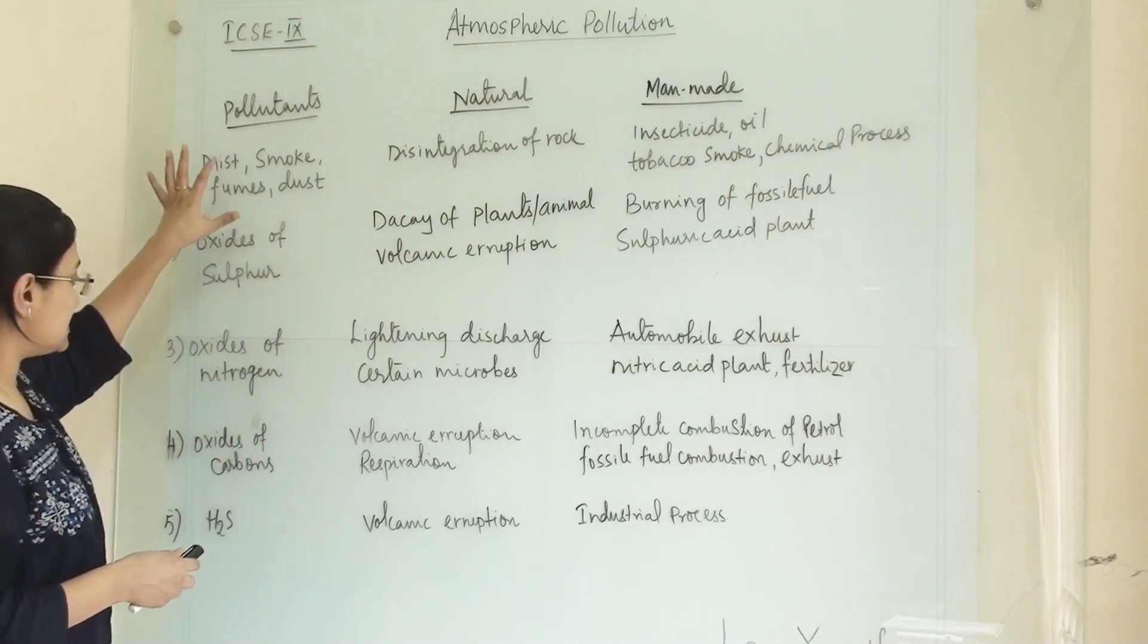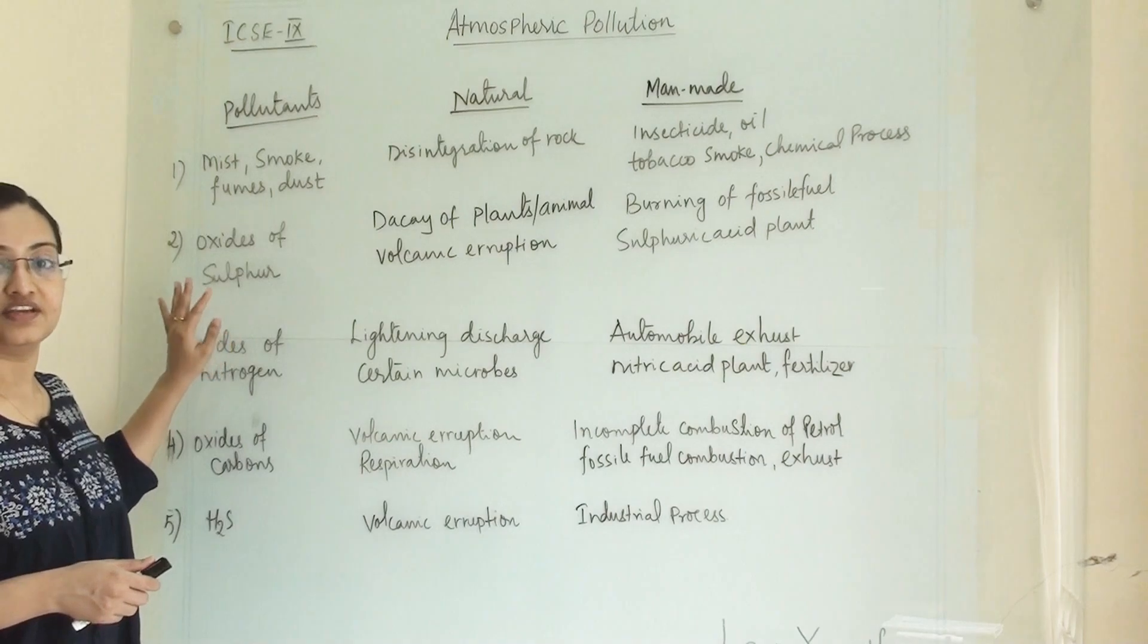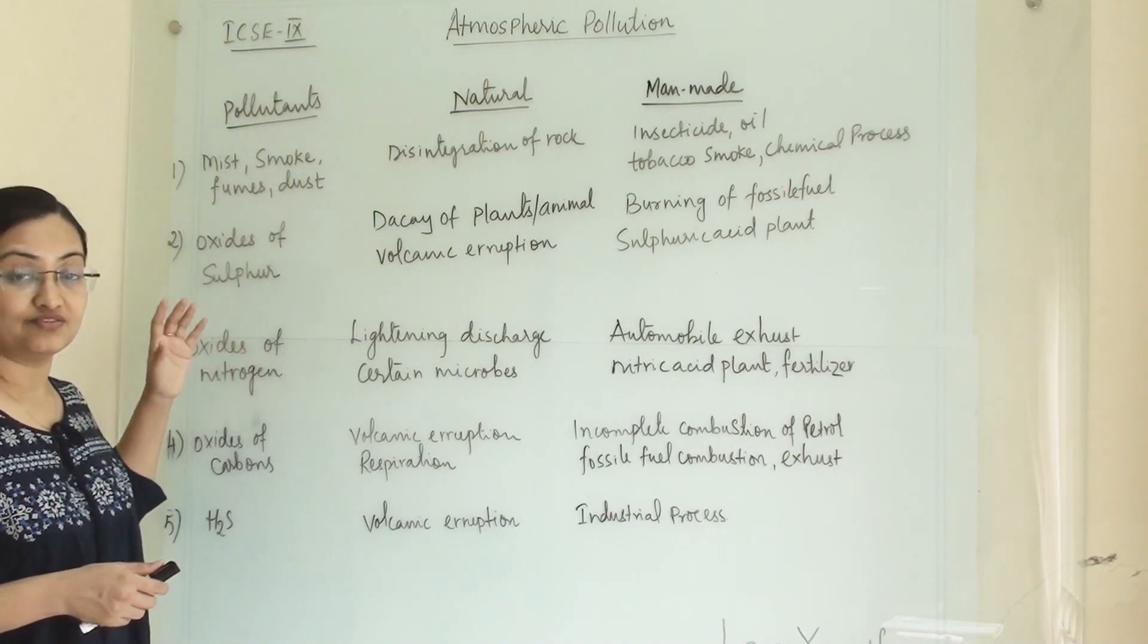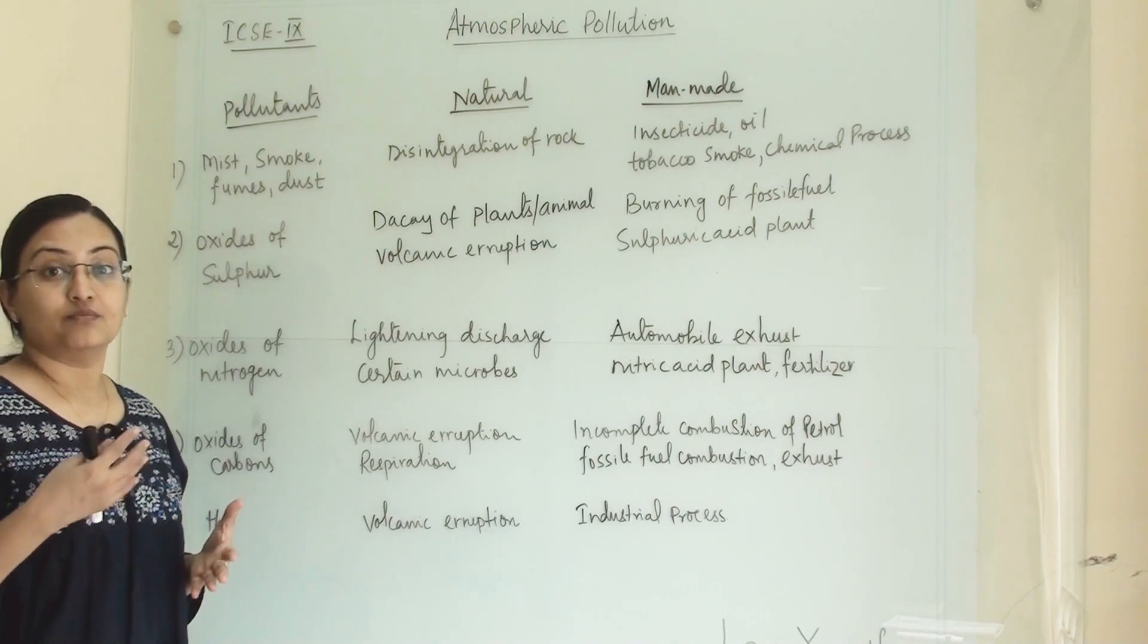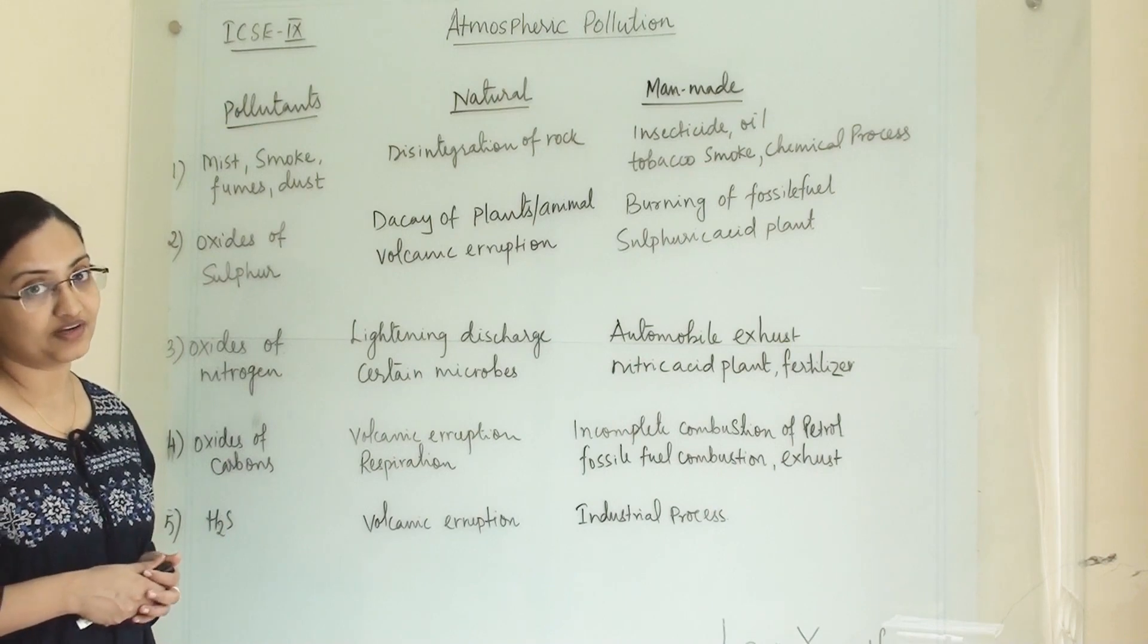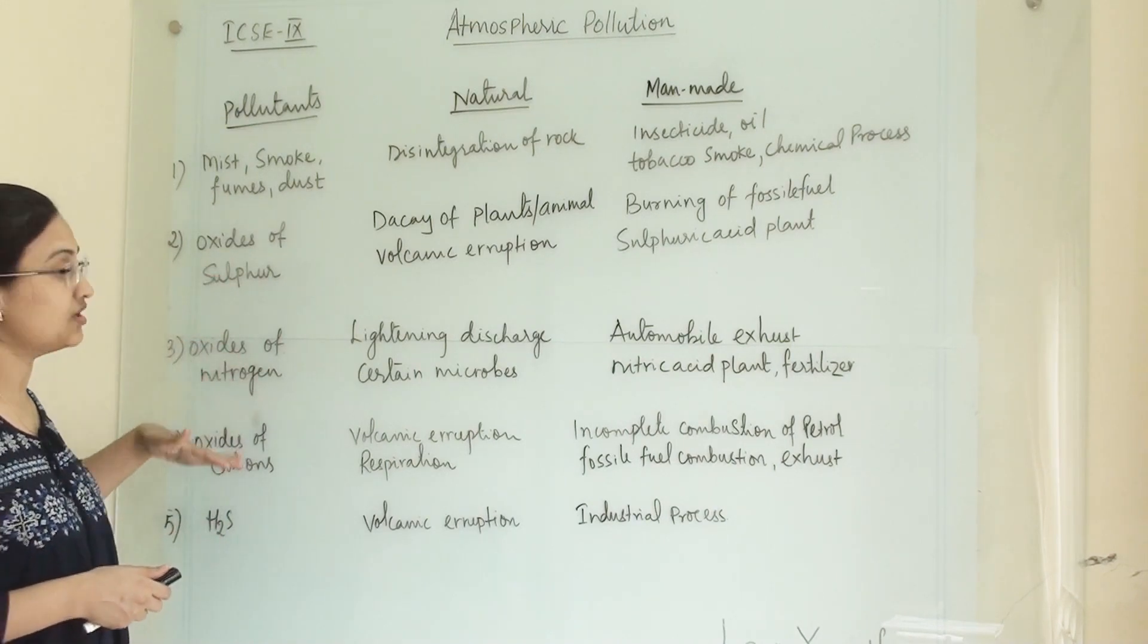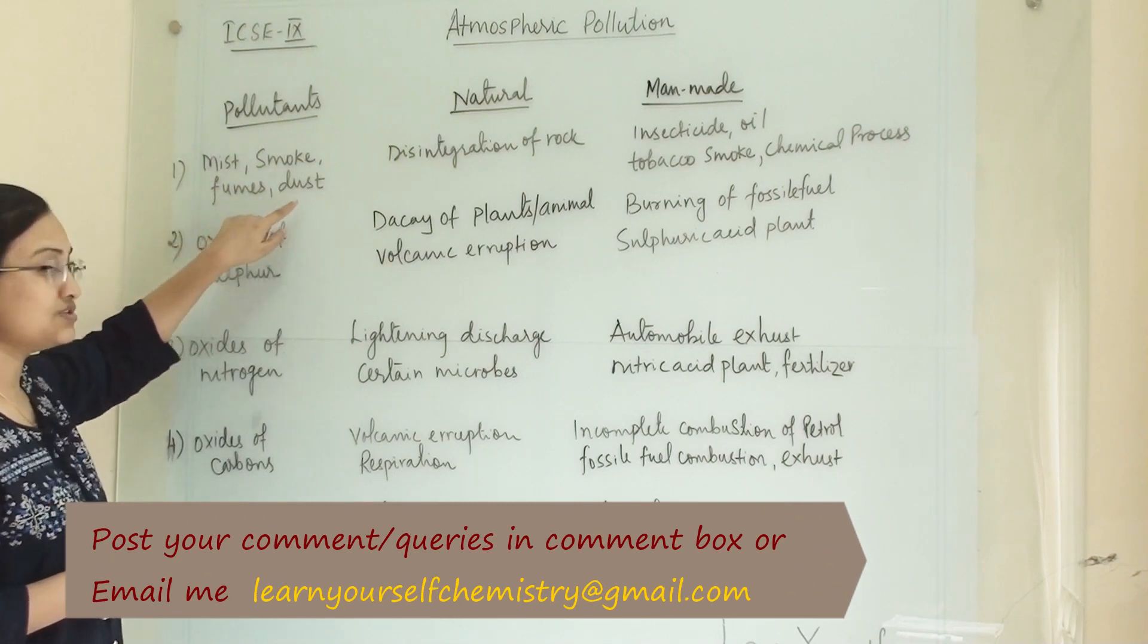Here are the list of pollutants, and these pollutant levels are really very high in the atmosphere. That's why it is causing global warming, greenhouse effect, ozone layer depletion, and so many harmful effects on our environment. So let us study one by one. First is mist, smoke, fumes, and dust.